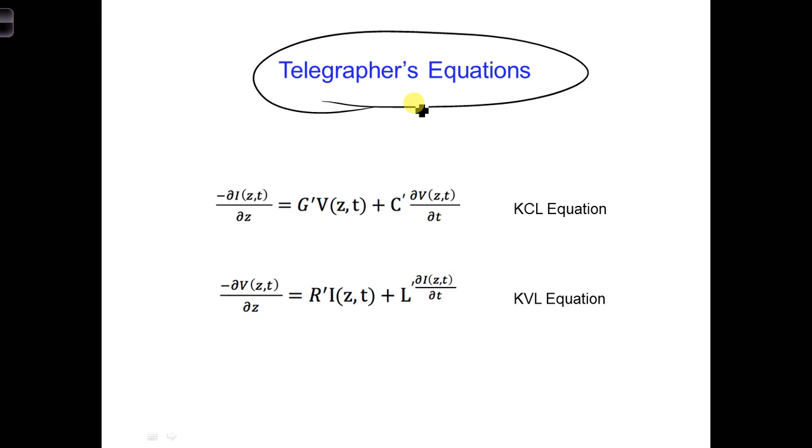Take out your in-class project notebook and write down these two telegrapher's equations and briefly describe what they are, what we can use them for, and how we just derived these two equations using the equivalent circuit you drew previously in your notebook.